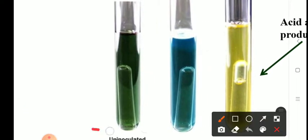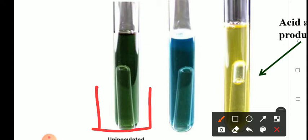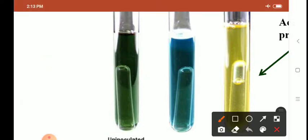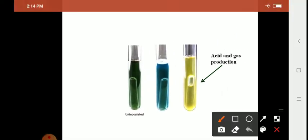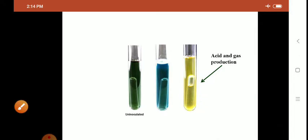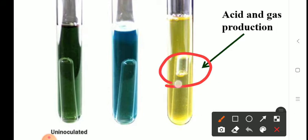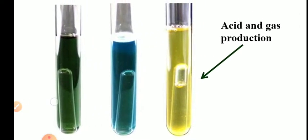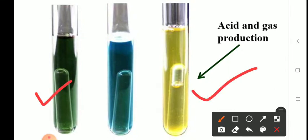The first tube is showing green color with a Durham tube also filled with medium — this is an un-inoculated or negative tube with green color. Now look at the third tube: the color of the medium has changed to yellow, meaning the organism is acid-producing. You can also see a gas bubble in the Durham tube. So acid and gas production indicates a positive presumptive tube — the color changes initially from green to yellow indicating acid production, and the bubble confirms gas production.